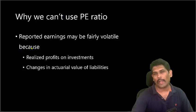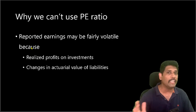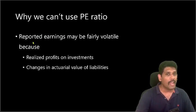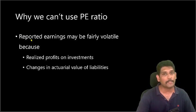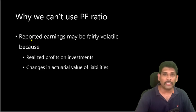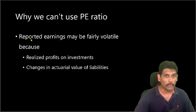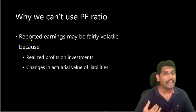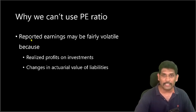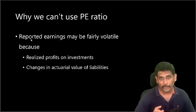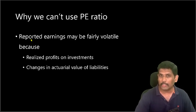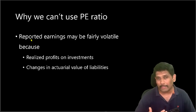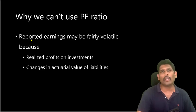Let us understand why we cannot use the traditional P/E ratio based approach to valuing a life insurance company. One of the key components of the income statement of an insurance company is investment income. Life insurance companies report their investment income on the basis of realized gains, and these numbers can fluctuate year to year because of market factors and the timing of sale of investments. Besides, another critical item is changes in value of actuarial liabilities, which also get affected when interest rates change. That is why we generally don't use an income statement based approach to valuing insurance.